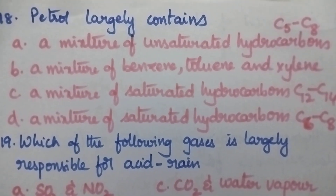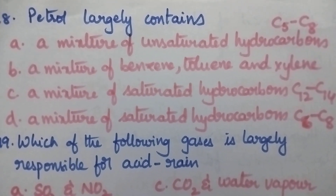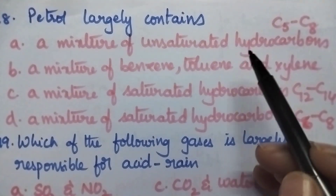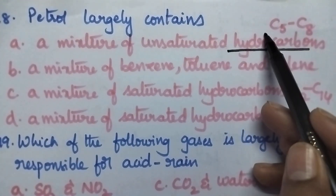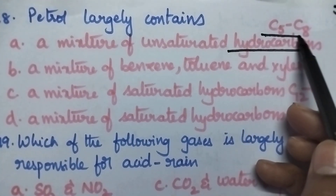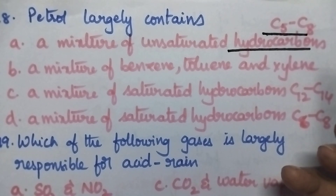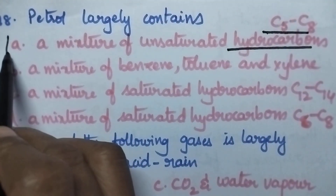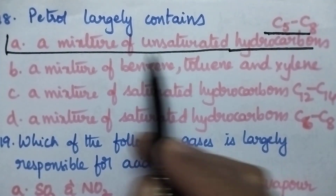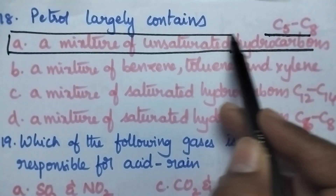Petrol largely contains hydrocarbons ranging from C5 to C8, so option A is the right answer.